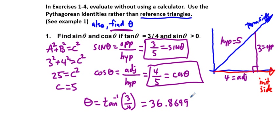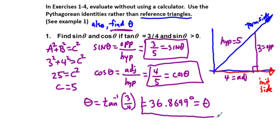Even though this is out to four decimal places, this is still an irrational number. As a matter of technicality, this is not 100% accurate — it is rounded, not an exact answer.